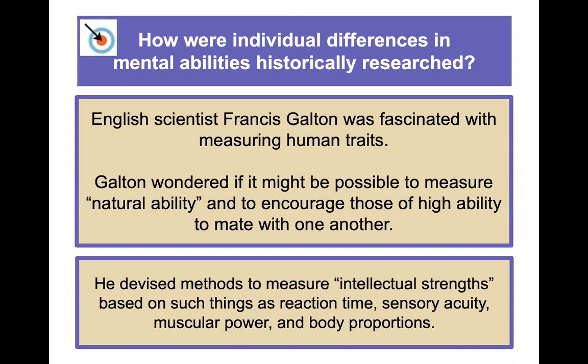English scientist Francis Galton was fascinated with measuring human traits — he was actually related to Charles Darwin. Galton wondered if it might be possible to measure natural ability, and to encourage those of high ability to mate with one another. This concept is called eugenics, which sounds creepy and kind of is — he wanted to figure out who the smart people were and encourage them to have children together.